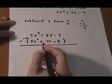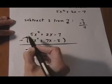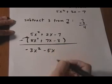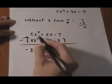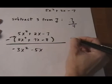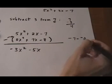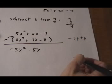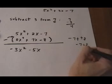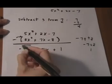5x squared take away 8x squared is minus 3x squared. 2x take away 7x is minus 5x. Minus 7 minus a negative 8 — add the opposite — minus 7 plus 8 gives us plus 1. And that's our final answer.